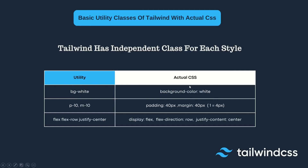Same for 'p-10' and 'm-10': 'p-10' sets padding to 40px, and 'm-10' sets margin to 40px. This is because 1 unit in Tailwind equals 4 pixels, so 10 × 4 = 40 pixels. These utility classes map directly to their corresponding CSS padding and margin properties.